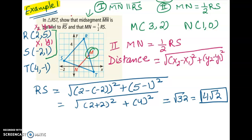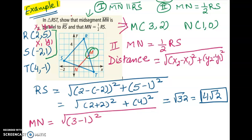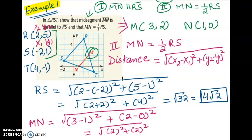Now let's find the distance between points M and N using the same formula with their coordinates. So we have the square root of (3 minus 1) squared plus (2 minus 0) squared. Simplifying: 2 squared plus 2 squared, which gives the square root of 8. When you simplify that further, you get 2 radical 2 — not 4 radical 2, but 2 radical 2.